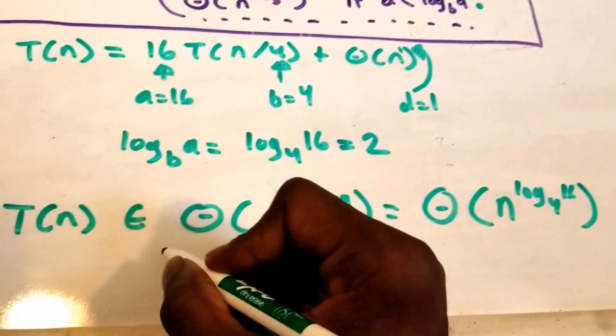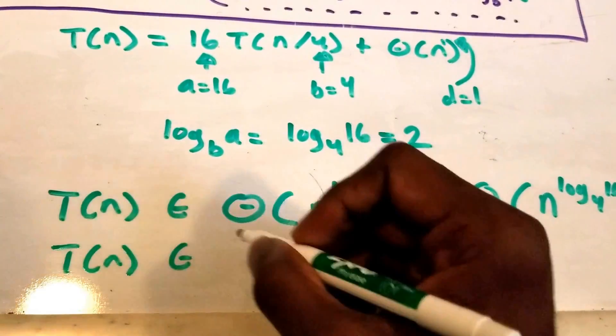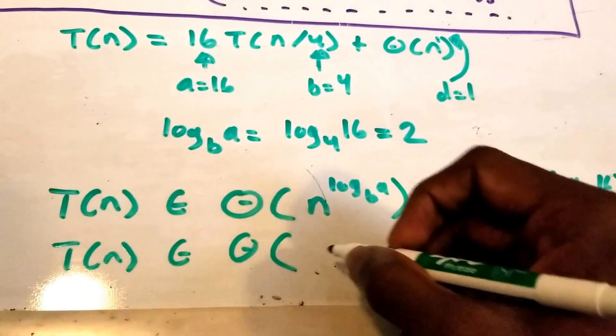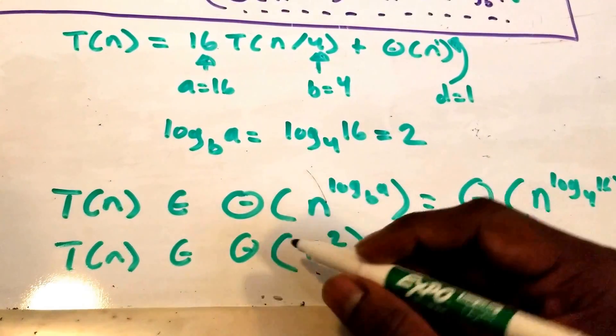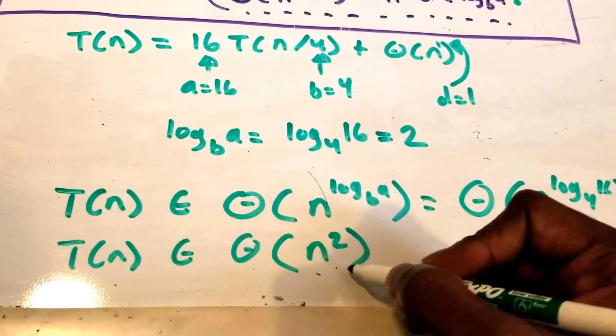Now I'm going to come down here and rewrite all of this. So that just tells us that this is n to the power of 2 or big theta of n to the power of 2.